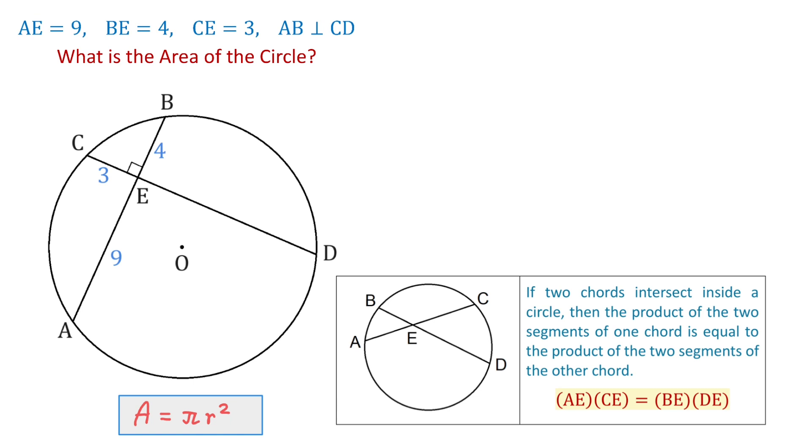In our case, 3 times DE equals 9 times 4. We will write that 3 times DE equals 9 times 4. Then DE equals 36 over 3. And DE equals 12.